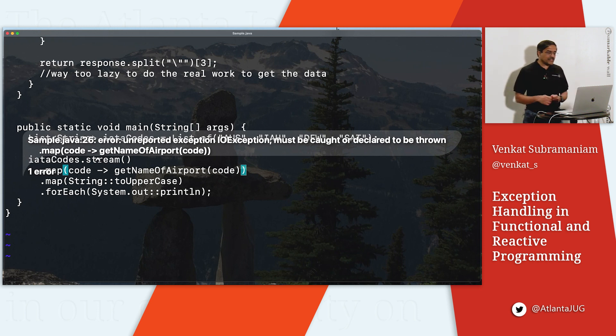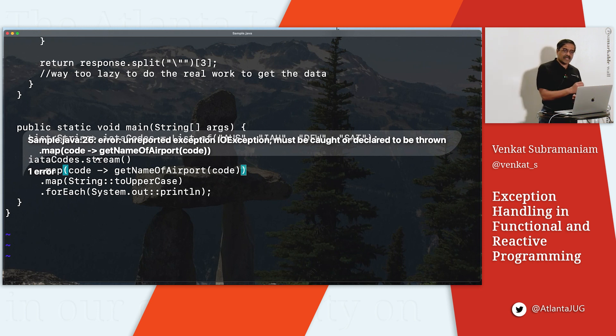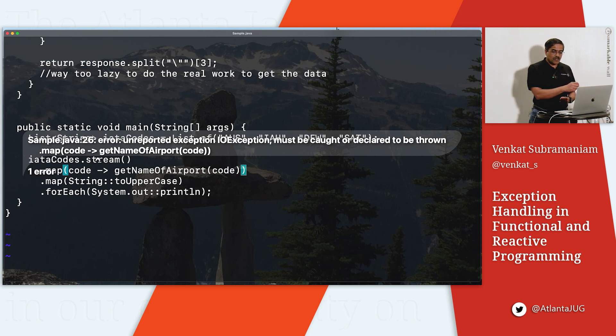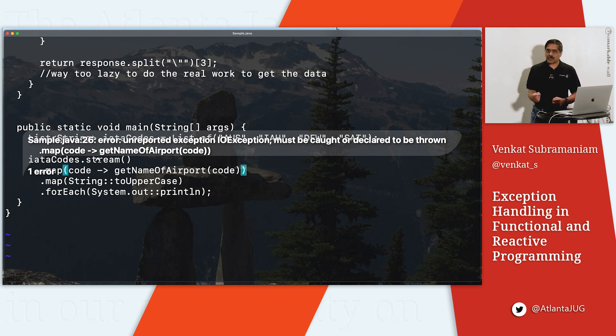We can say map with String.toUpperCase, converting to uppercase. The next step is to map and, given a code, call getAirportNames passing the code. When I write this code, we are saying: given the airport codes, for each airport code, call the function to get the name, then convert it to uppercase and print it. That is amazingly simple, easy to understand, no accidental complexity in the code - definitely something to celebrate. Except for one little problem: when you run this code, it gives you a compilation error. The error says unreported exception IOException must be caught or declared to be thrown.